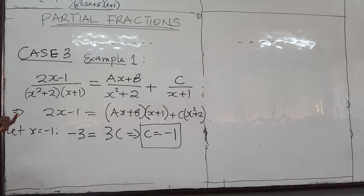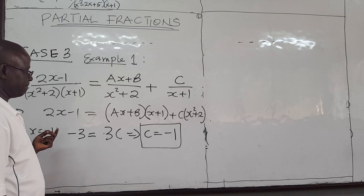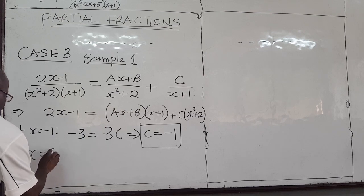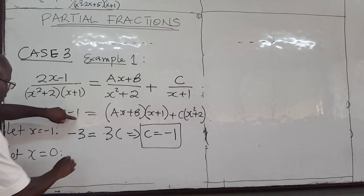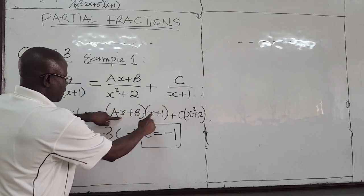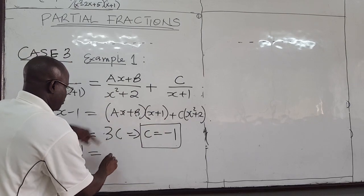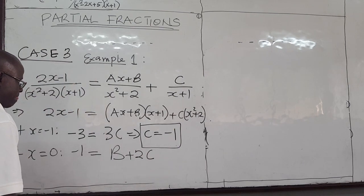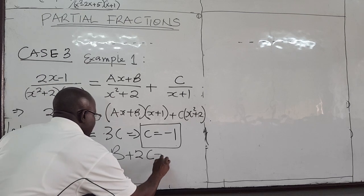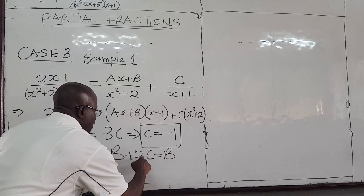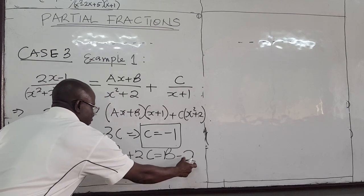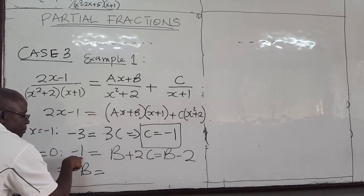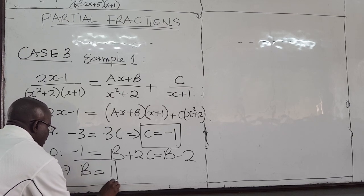So we have c already. Now you can choose any other two values for x, because you have 3 constants. Let x be equal to 0 — this is easier to work with. With x equal to 0: the left side gives negative 1. The ax term goes to 0, so I have b times 1, which gives b. And on the right, x squared goes to 0, so I have 2c, which is 2 times negative 1, which is negative 2. So bringing those together: negative 1 equals b plus negative 2, which gives b equal to 1.